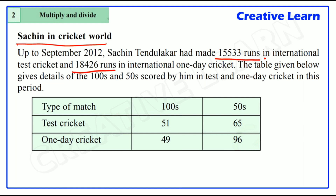The table given below gives details of the centuries and half-centuries scored by him in test and one-day cricket in this period. In test cricket: number of centuries is 51, and number of half-centuries is 65. In one-day cricket: number of centuries is 49, and number of half-centuries is 96.